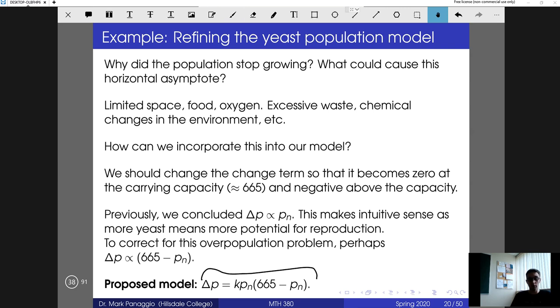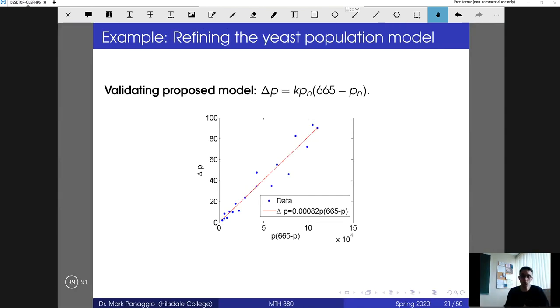Now we would like to evaluate this model and see if it does a better job than the one we started with. One way to do this is to use a graphical approach. We can graph the quantity on the right-hand side without the proportionality constant: p times (665 minus p) on the horizontal axis, and on the vertical axis we plot the actual change. If this is indeed a true proportionality relationship, then we would expect to have some sort of line through the origin that captures the trend. When you draw the graph, there is a nice linear fit that you can generate and it has a slope of 0.00082. So that suggests that the right model for the change has that form.